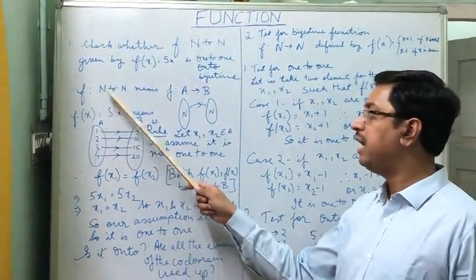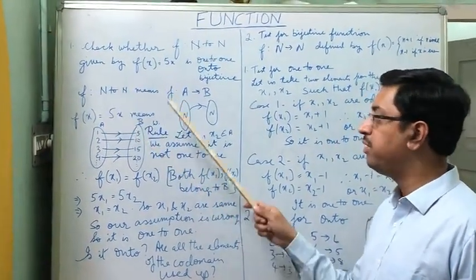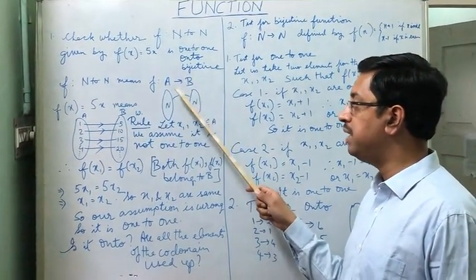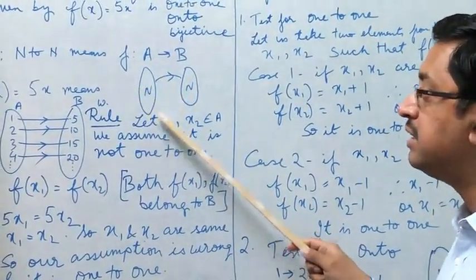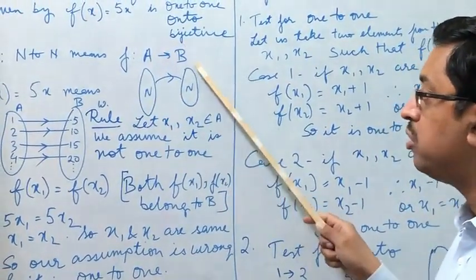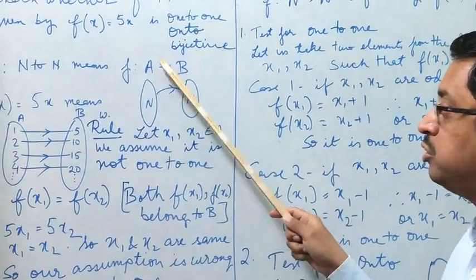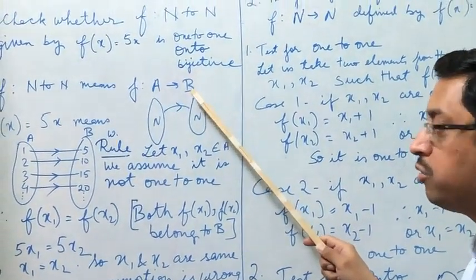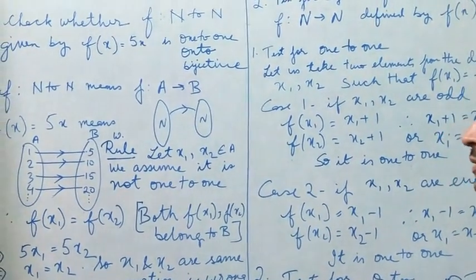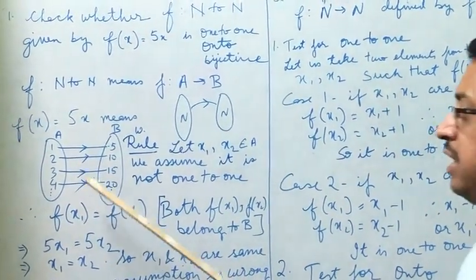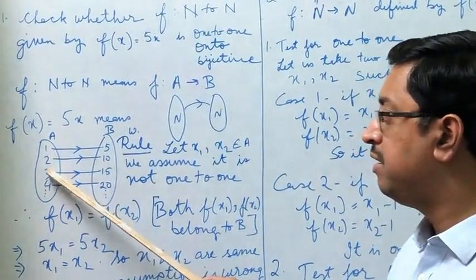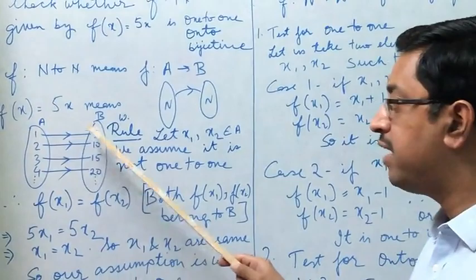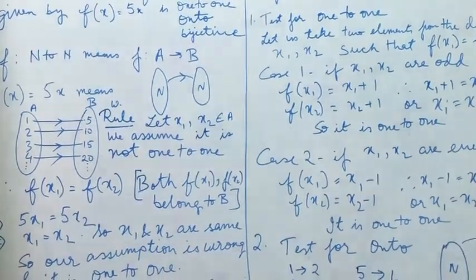The function N to N means a function from set A to set B where set A is the set of natural numbers and B is also the set of natural numbers. The domain is the set of natural numbers and the co-domain is also the set of natural numbers. If we take different natural numbers from set A and put them inside, five times that we'll be getting in set B.